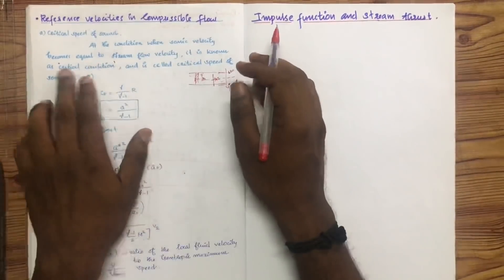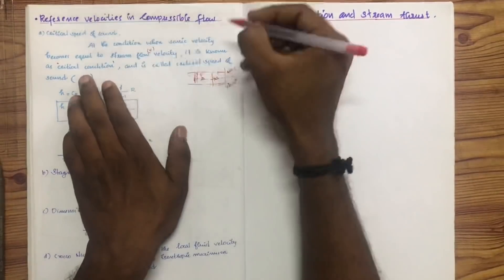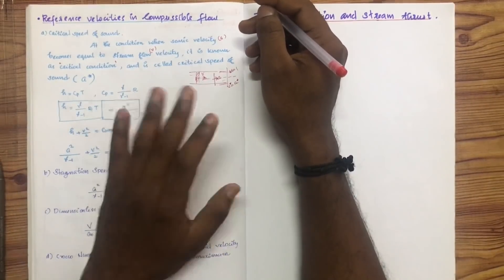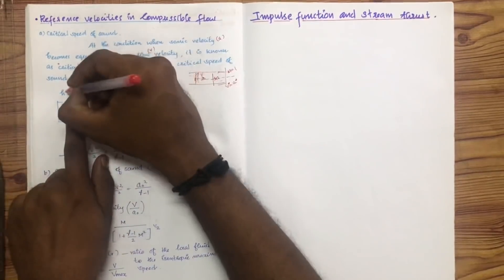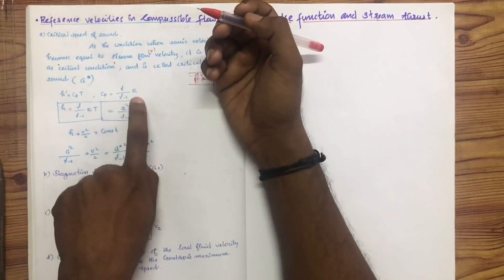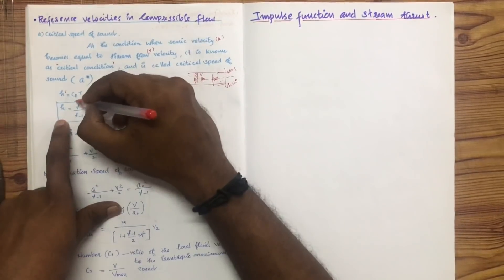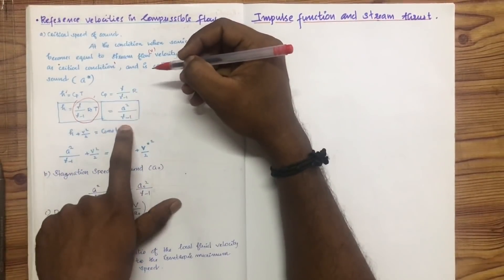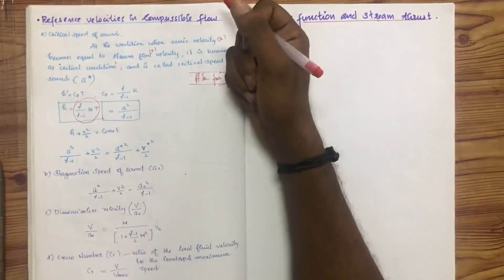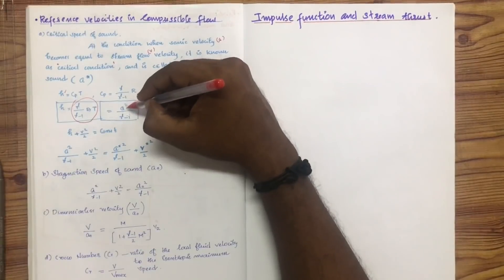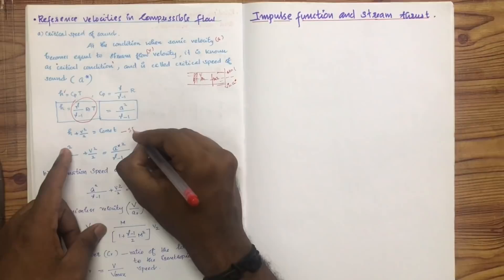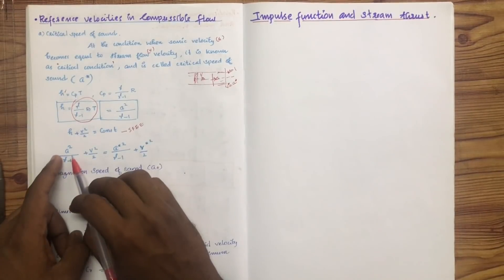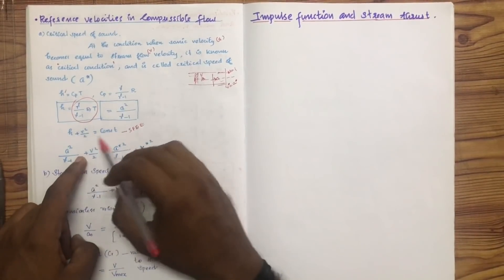The critical condition is when the sonic velocity equals the stream velocity V. This is the critical speed of sound, denoted A-star. We can express enthalpy h using Cp, and Cp equals gamma by gamma minus 1 into R. Substituting h, we get the steady flow energy equation as: a squared by gamma minus 1 plus V squared by 2 equals constant.